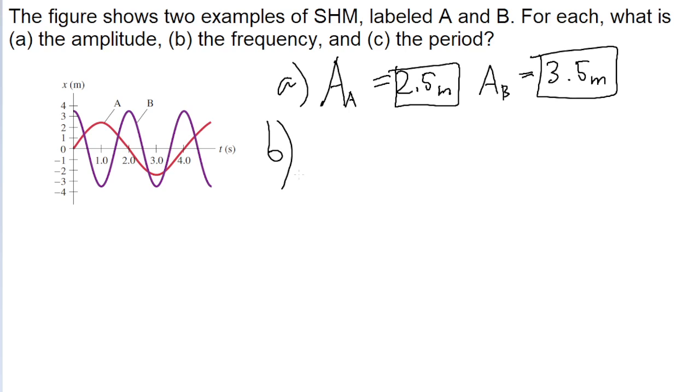Part B of the problem asks us to find the frequency. Remember that frequency refers to the number of cycles that an oscillation makes each second, or another way to phrase it, how many periods the function goes through each second.